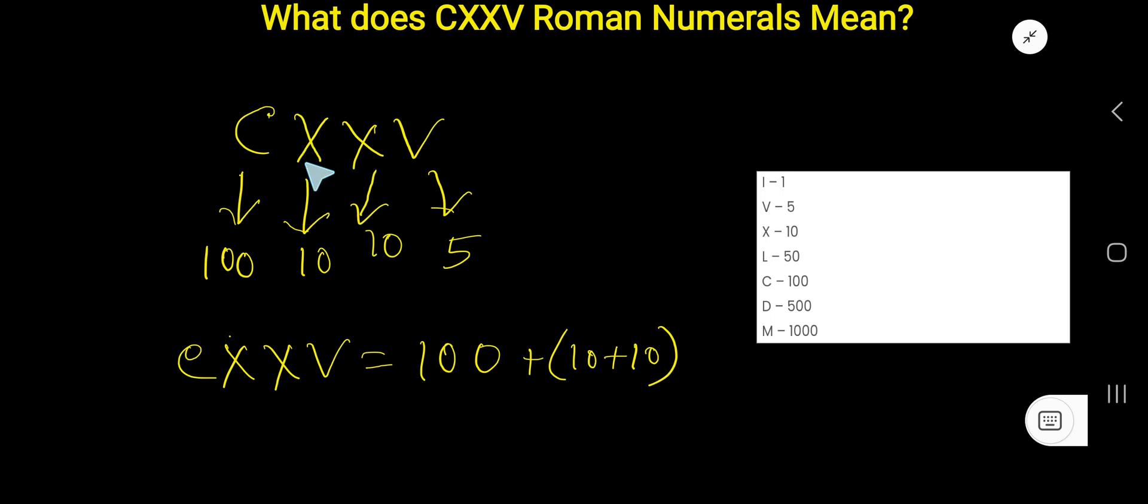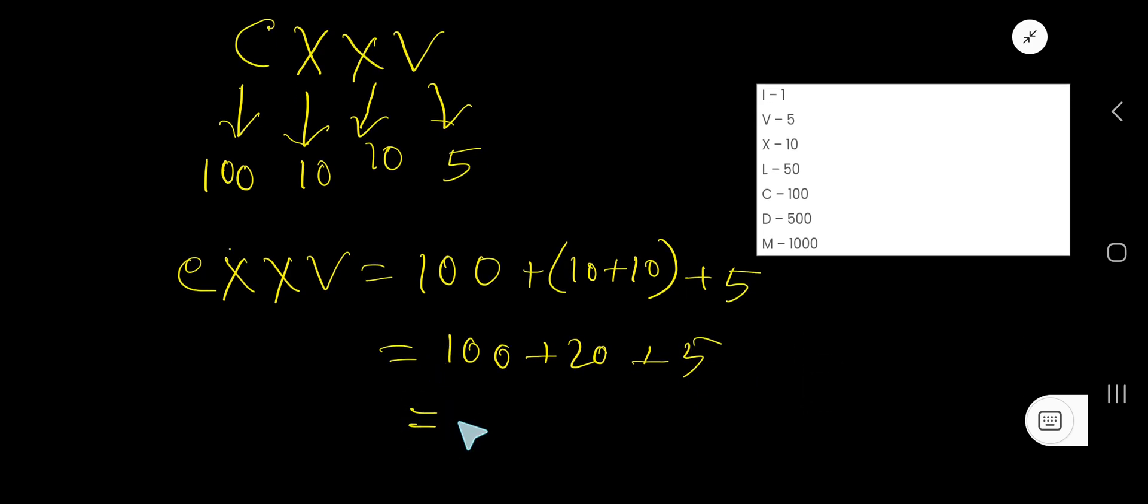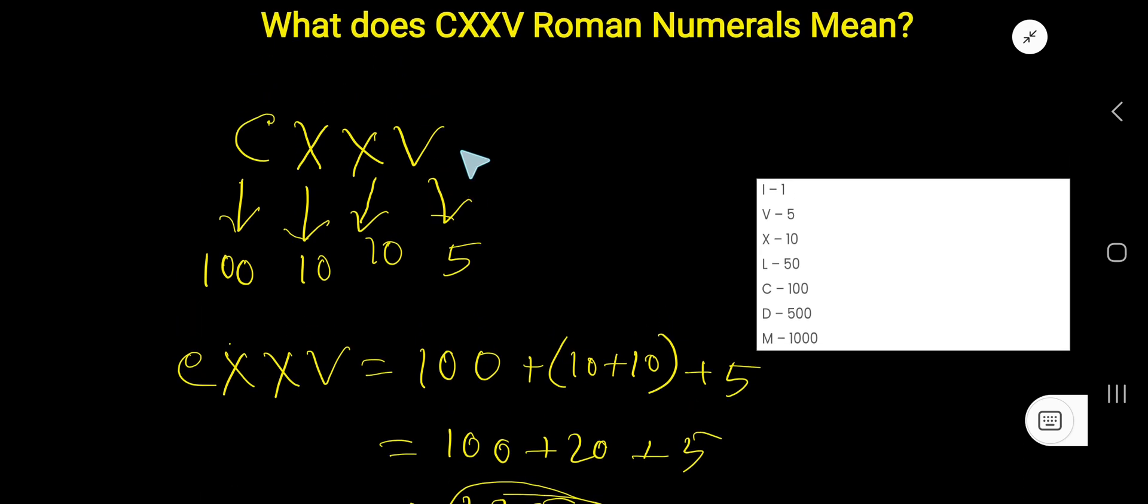Then V, which is 5, is less than 10, so we have to add 5. V means 5, so we are getting 100 plus 20 plus 5, that is 125. So this Roman numeral means 125.